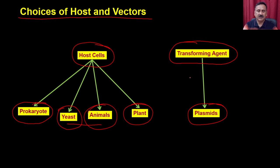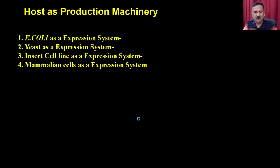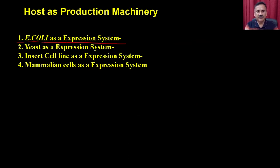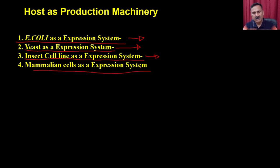What we are going to discuss is the prokaryotic expression system, the yeast expression system, the animal expression system, and the insect cell line as an expression system, and the mammalian expression system. Before getting into these choices, for a particular gene you have four or even more choices. The first question is how you can select the particular expression system, because every expression system has its positives and negatives.